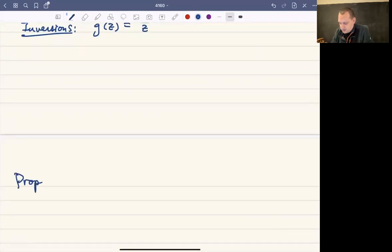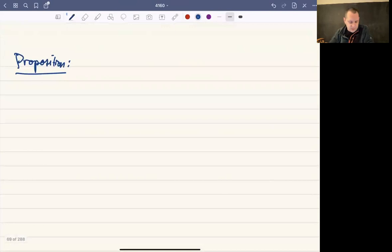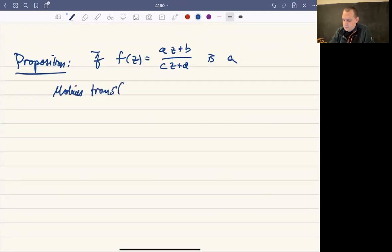The other fact that I wanted to talk about is if f, call this (az + b)/(cz + d), is a Mobius transform, then f maps circles and lines to circles and lines.